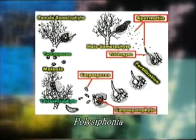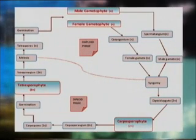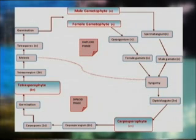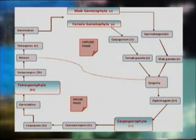Here, the gametophytes represent the haploid phase which produces gametes. These gametes fuse to form a zygote. The zygote formed after fertilization does not divide meiotically but undergoes mitosis to form a filamentous diploid plant called as carposporophyte. It remains attached parasitically to the parent gametophyte. This carposporophyte later bears carposporangia, with each carposporangium producing a diploid carpospore. The carpospore on liberation germinates and develops into a diploid free-living tetrasporophyte.